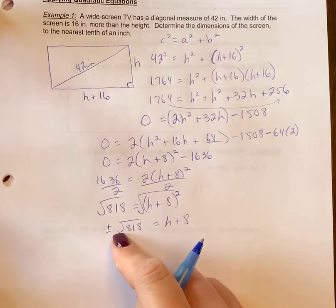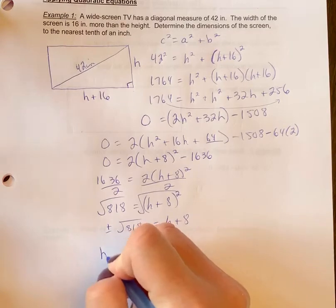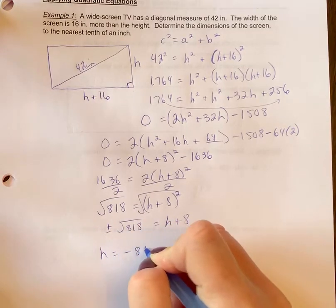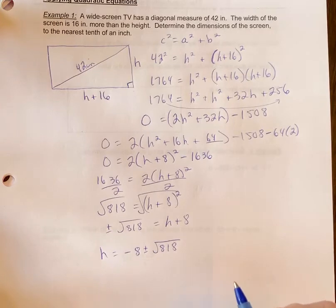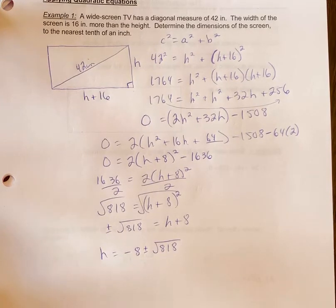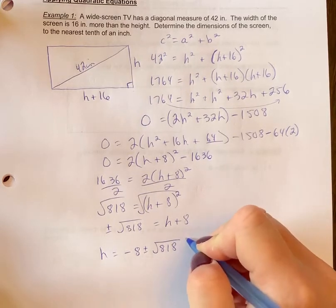Now you're going to move 8 to the other side by subtracting. So height is equal to negative 8 plus or minus the square root of 818. And now that's the exact value, which is great. But the question says determine the screen to the nearest tenth of an inch, so we need to put this as decimals. Plus we don't want to know what of them might be a negative answer. We can't have two answers here.